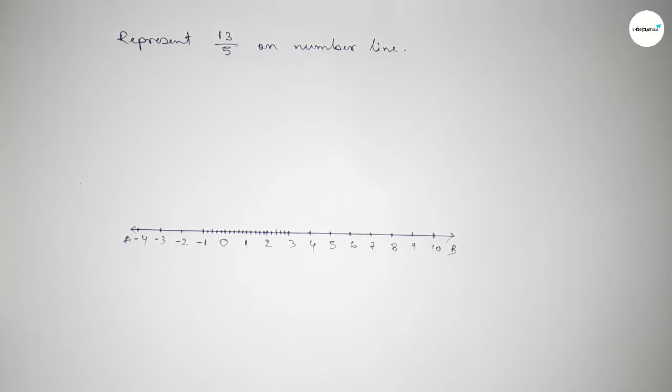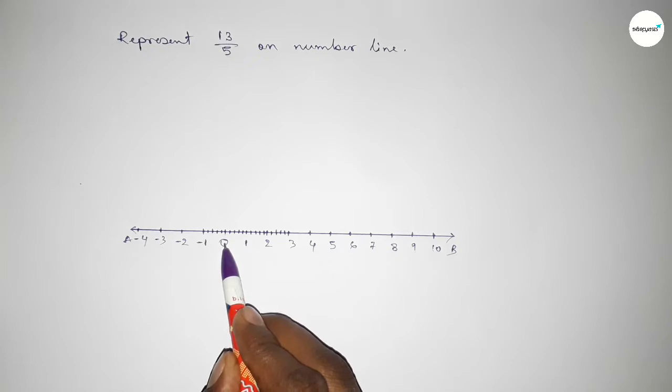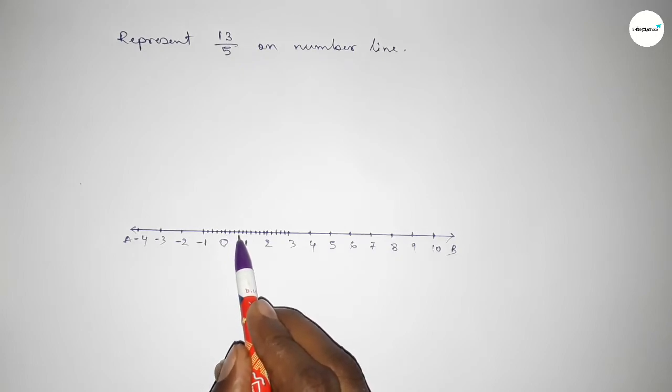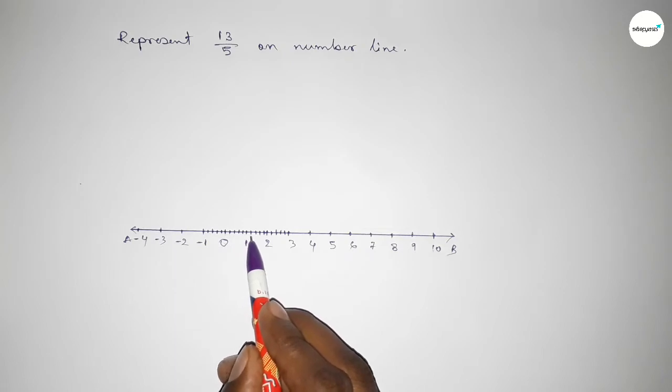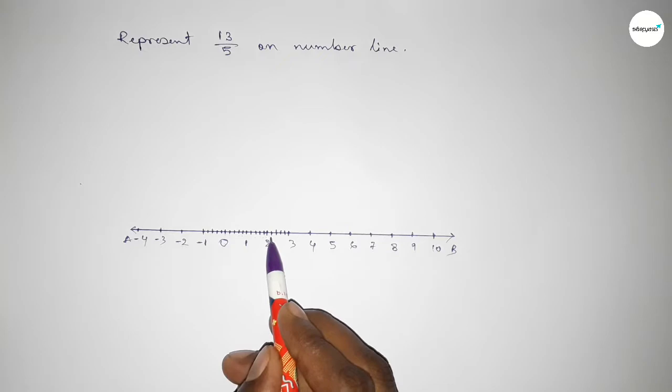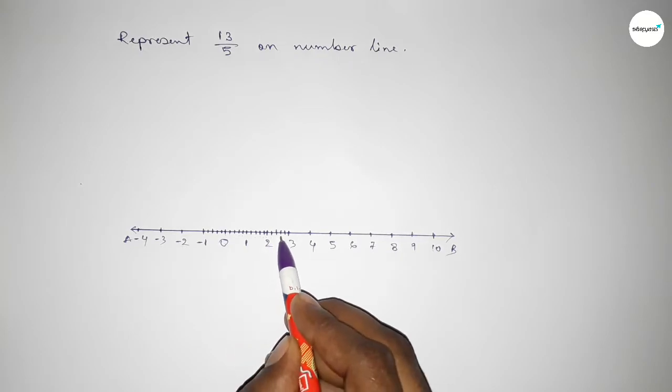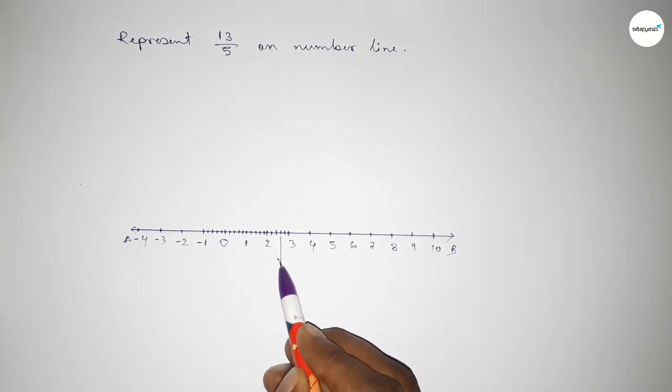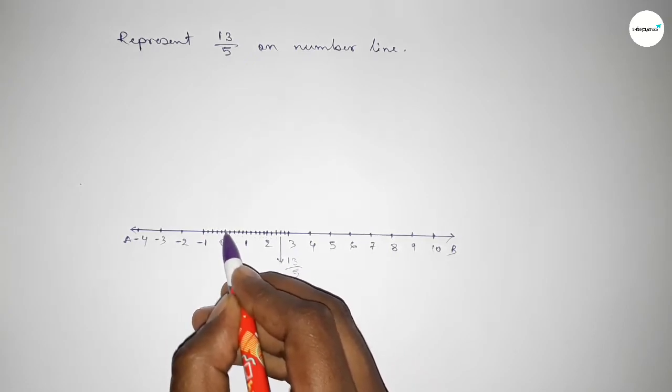Now taking from zero, this is 1/5, 2/5, 3/5, 4/5, 5/5, 6/5, 7/5, 8/5, 9/5, 10/5, 11/5, 12/5, and this is 13/5 on the number line. So here are O and P. Therefore, OP equals 13/5 units.